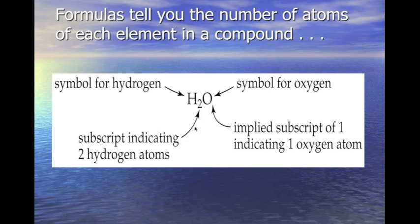Taking water as an example, we see that it's H2O. The H stands for the symbol for hydrogen. The 2 is a subscript which indicates the amount of hydrogen atoms we have — two of them. O stands for oxygen, and it doesn't have a subscript, so it has an implied subscript of 1, meaning we have two hydrogens and one oxygen in our formula.